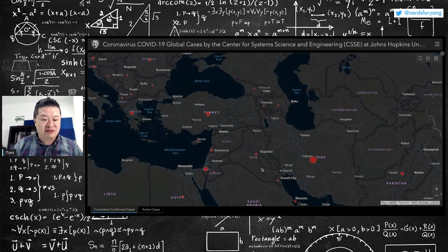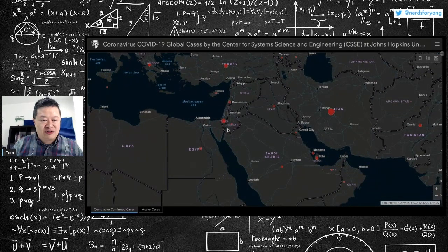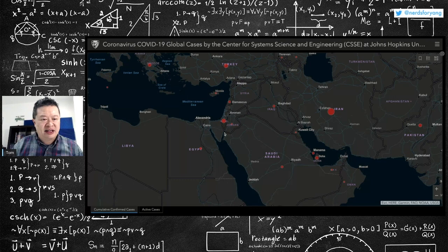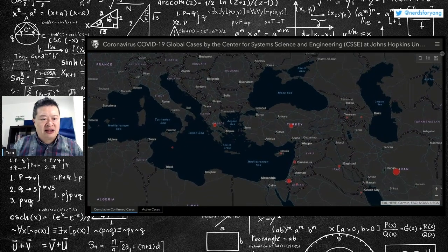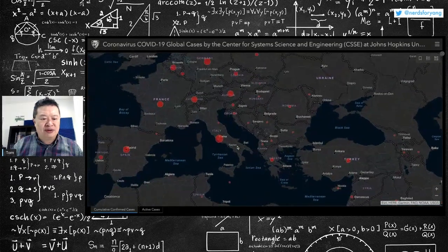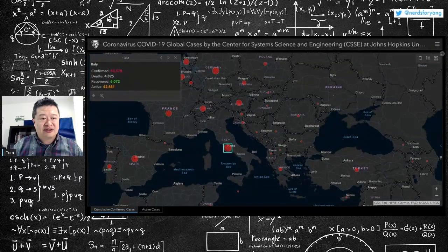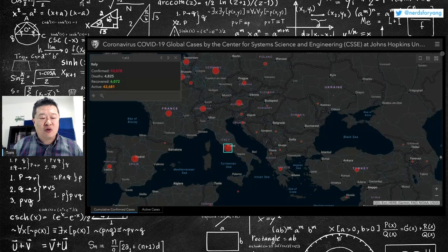So crazy how now Israel has 883 confirmed cases, one death. Now if you look at Europe, I mean, Italy is just nuts with 4,800 deaths.